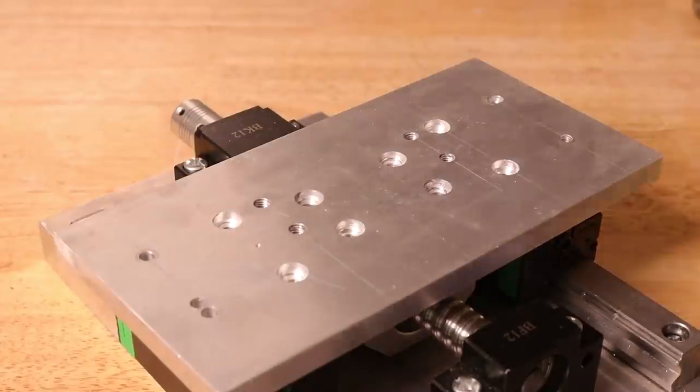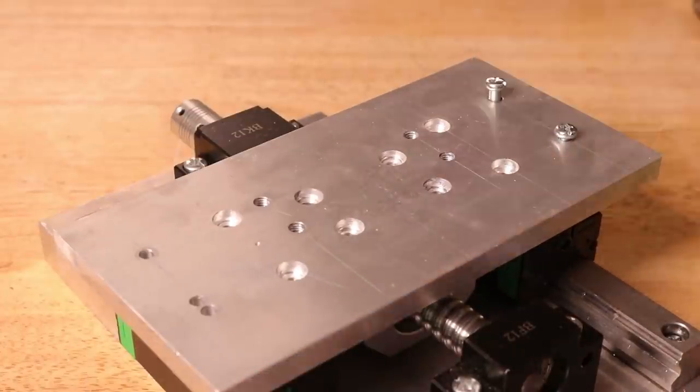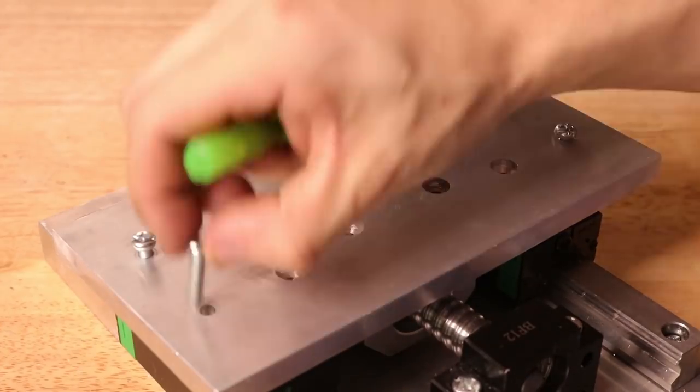Once that's done, I can screw on a piece of aluminum plate onto which we can then mount the 400 watt spindle.